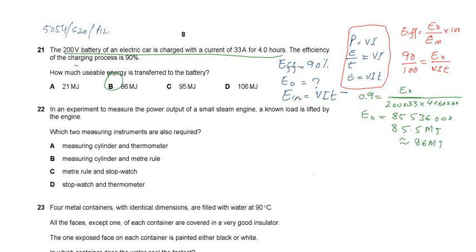A charger charges a 200 volt battery. The charge duration is 4 hours and the current flow is 33 amperes.